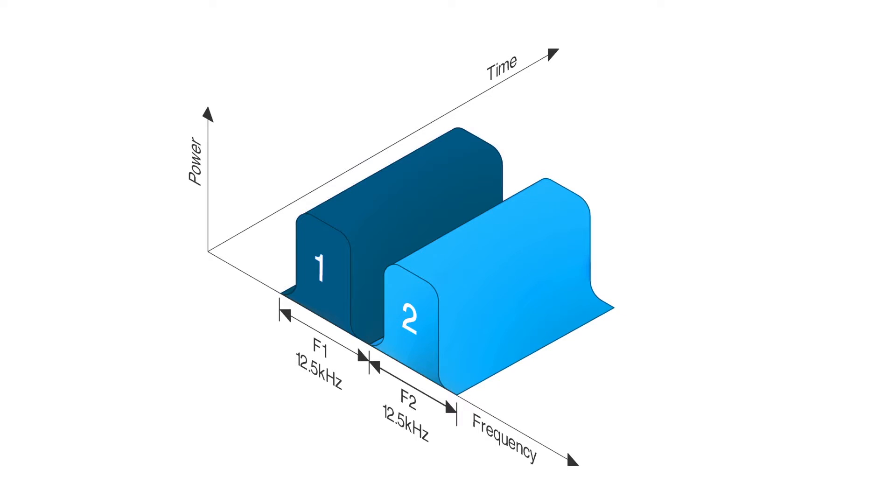An RF channel occupies a certain amount of radio spectrum. How do we make the most efficient use of the small chunk of radio spectrum which is our channel? There are two different techniques we could use. One is to separate channels by frequency, so if you want to have two channels you'll have two separate frequencies. If a conversation runs across this channel, it occupies the whole of the channel exclusively.